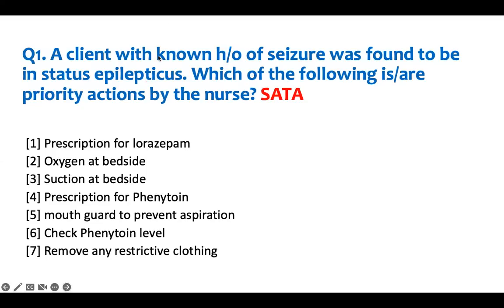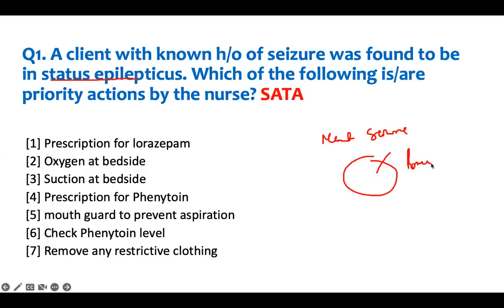There are certain things I should not do and certain things I should do. Before you look at the answer choices, you also have to define what status epilepticus is. It means the patient is continuously having seizures — recurrent seizures back to back — not giving the brain time to recover. This is deadly. It's an emergency. You have to do something to break the recurrent circuit that is causing the brain to undergo seizure.